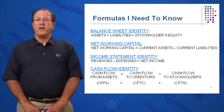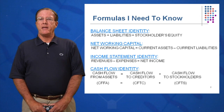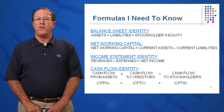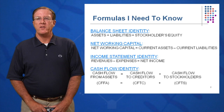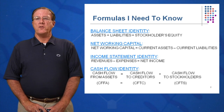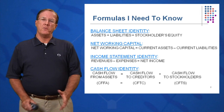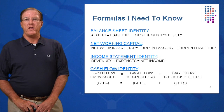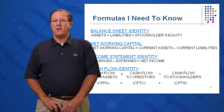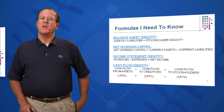And finally, and maybe most important, the cash flow identity or free cash flow: cash flow from assets equals cash flow to creditors plus cash flow to stockholders. We'll show you a couple of ways to calculate those equations.